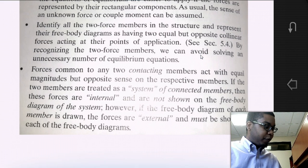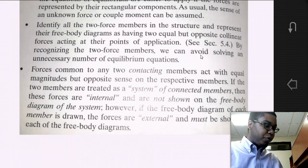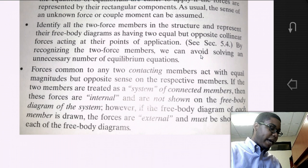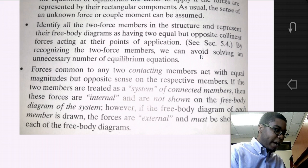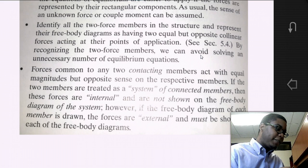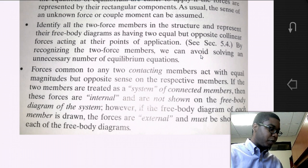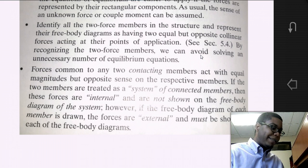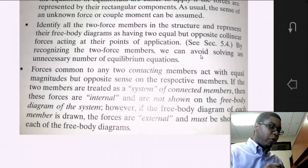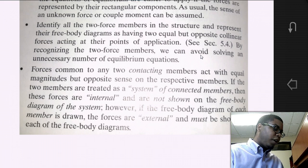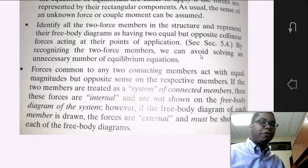The next step, forces common to any two contacting members are going to act with equal magnitude but opposite sense on the respective members. If the two members are treated as a system of connected members, then these forces are internal and are not shown on the free body diagram of the system. However, if the free body diagram of each member is drawn, the forces are external and must be shown on each of the free body diagrams.